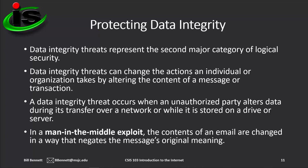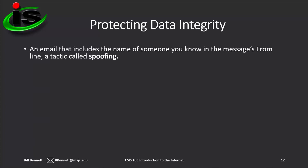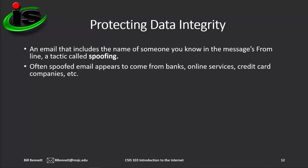For example, an attacker could intercept an email message containing a transcript of a legal meeting and change its content in a way that adversely affects a client. Integrity threats that occur when you receive an email message that appears legitimate, such as an email from your bank, but is instead from someone misrepresenting his or her identity, is known as spoofing. The spoofed identity of the sender makes it more likely that you will open the message because it appears to be real. Many people have received spoofed email messages from banks, online subscriptions, and credit card companies indicating that an account has been lost or must be verified.